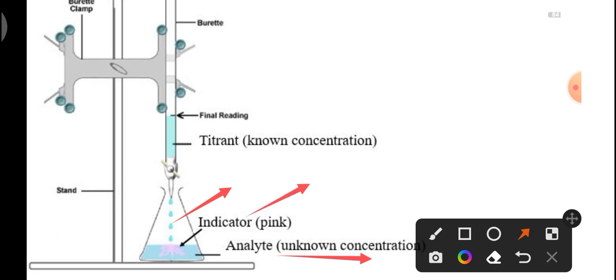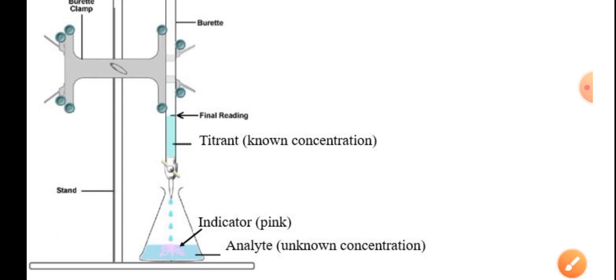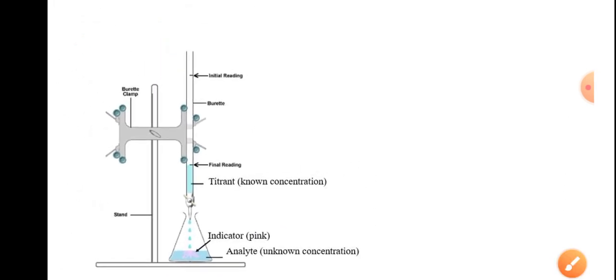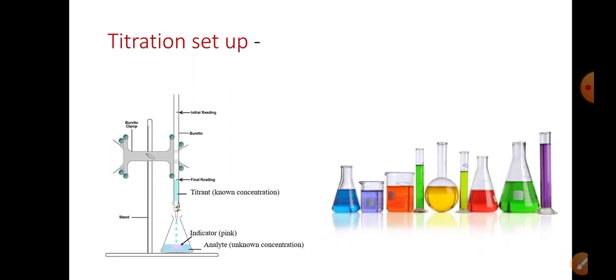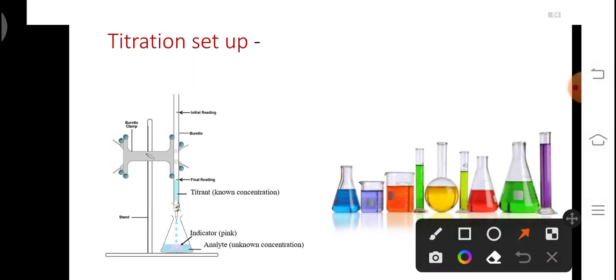Indicator is used to see the end point of the titration. Indicator usually indicates the completion of the reaction between the analyte and the titrant with the help of the color change. We usually observe a change in color during the end point of the reaction. Usually used glasswares are conical flask, beaker, measuring cylinder, round bottom flask, etc.